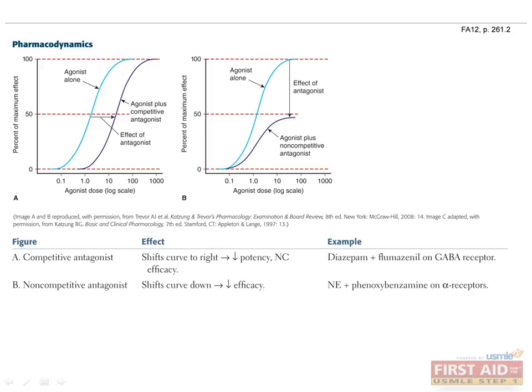Figure B shows the curve of a noncompetitive antagonist. The curve is shifted down for any given dose of the agonist, corresponding to a decrease in efficacy or maximal effect. An example of this is norepinephrine plus phenoxybenzamine acting on alpha receptors. Phenoxybenzamine is a noncompetitive antagonist at alpha receptors, so no matter how high the concentration of norepinephrine, its effect will be reduced. Hence, this drug is useful in treating hypertension in patients with pheochromocytoma.